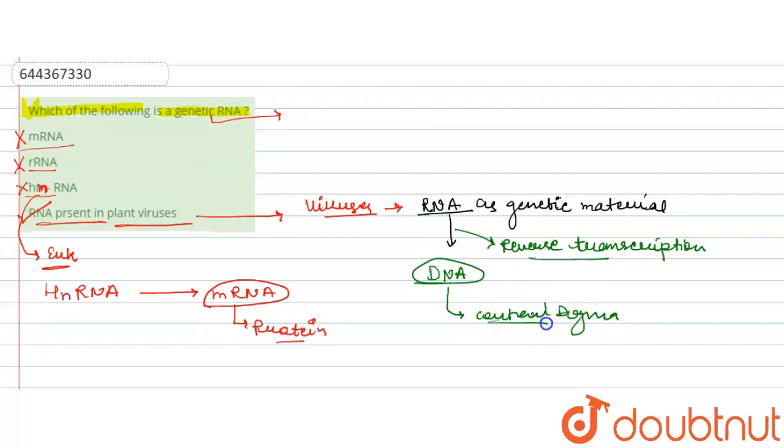The further converted into the mRNA, then protein. So this is all about the whole cycle of the central dogma. But here is the RNA which acts as a genetic material in some viruses. So we can say that option D, that is RNA present in plant viruses, will be the right answer over here. Thank you.